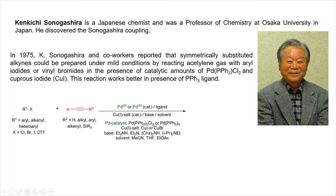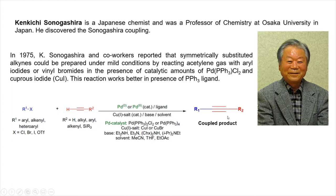Commonly used catalysts include bis(chloro)bis(triphenylphosphine)palladium or tetrakis(triphenylphosphine)palladium. The copper(I) salt can be copper(I) iodide or copper bromide. Commonly used bases are diethylamine, triethylamine, and dialkylamine — for example, dimethylamine or diisopropylethylamine. In most cases these bases are liquid and can be used directly as solvents, but if your starting material is not soluble, you can use acetonitrile, THF, tetrahydrofuran, or ethyl acetate.